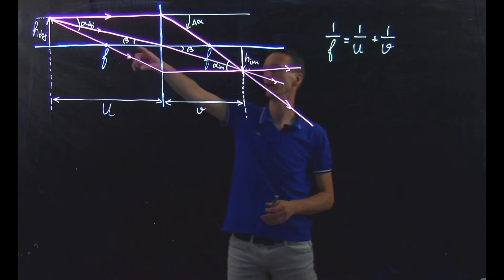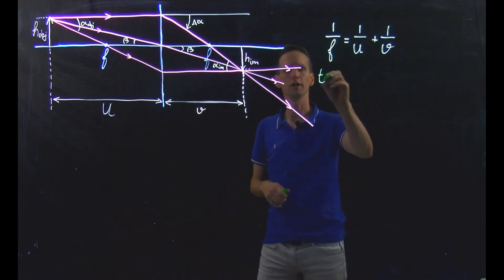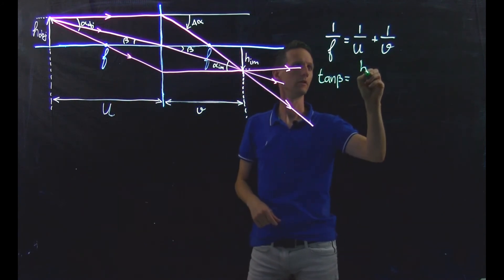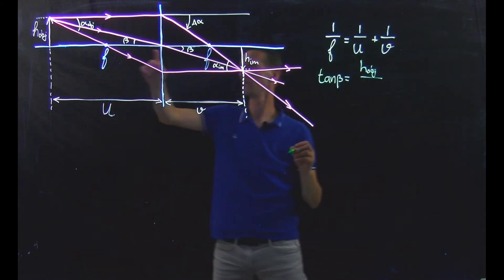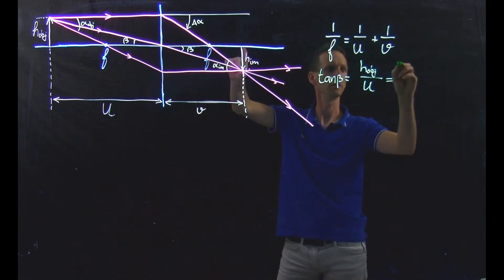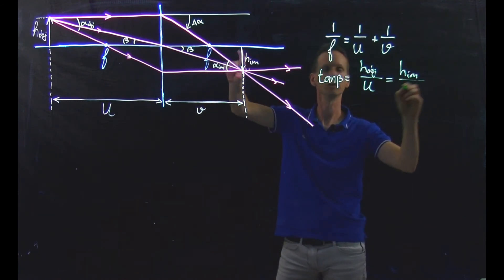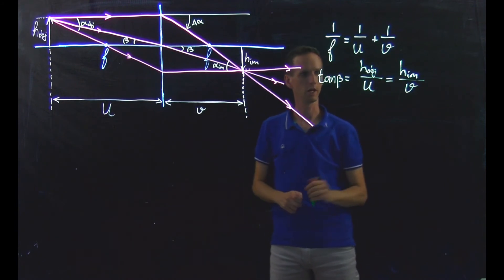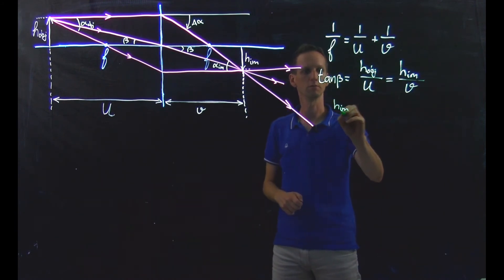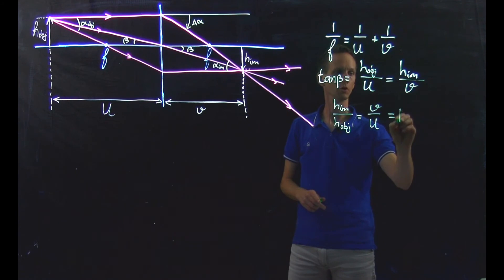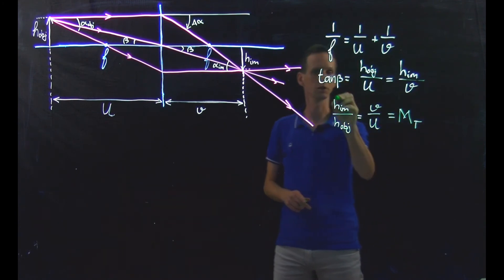We can now see a relation for the angles β. The tangent of β is given by h-object divided by the distance u that the object is from the axis. We have a similar relation on the other side, but with the height of the image divided by the distance v. So if we look at this equation, we see that the magnification h-image over h-object is given by v over u. This is what we call the transversal magnification of the lens.